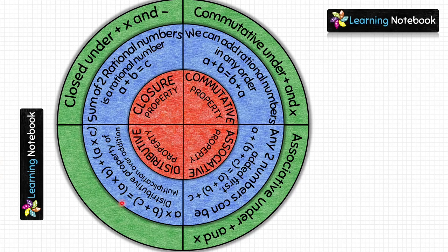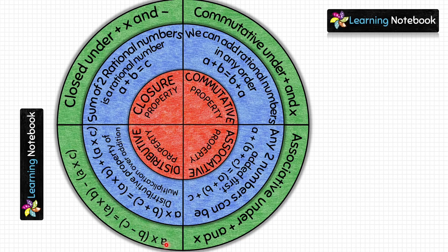For distributive property, in the blue circle we wrote the distributive property of multiplication over addition. In the green circle, write the general form for distributive property of multiplication over subtraction: a × (b − c) = a × b − a × c.